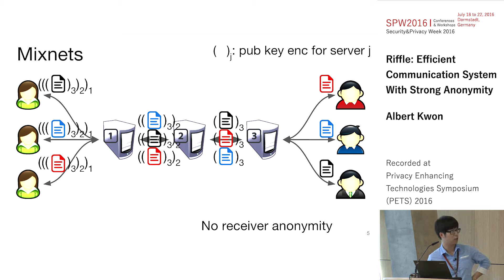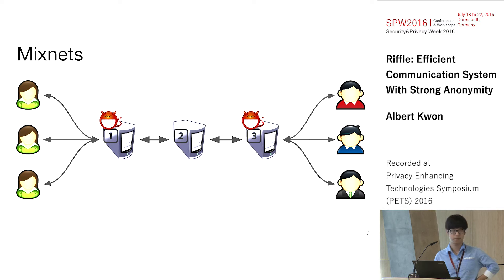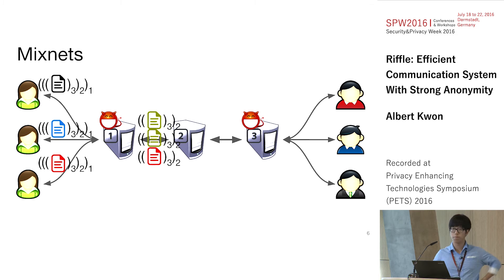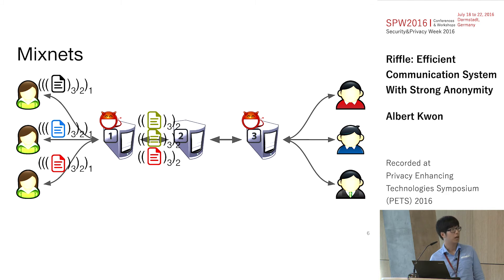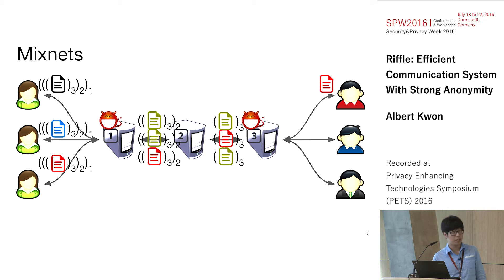The second problem is more subtle: if you have actively malicious servers permuting your messages, you may not even have sender anonymity. Consider an attack where the first and last servers are malicious. The first server replaces all messages except one it wants to de-anonymize — the red message sent by the last Alice on the left — with garbage. The second server has no way to tell this has happened since everything uses public key crypto, so it happily carries out the protocol. The third server drops all garbage messages and relays only the red message, so the adversary now knows who is talking to whom.